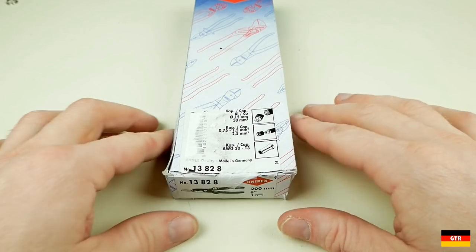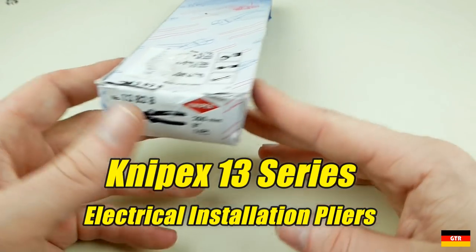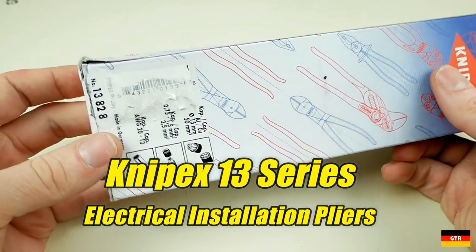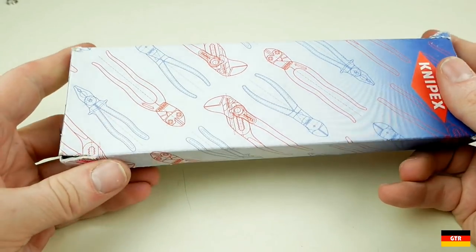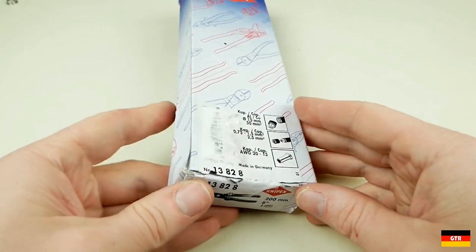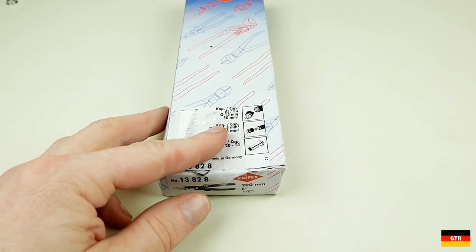Welcome everyone to German Tool Reviews. Today we're going to take a look at the KNIPEX Series 13 pliers used for electrical installation. These are multi-functional pliers that are targeted for electricians doing structured residential and commercial wiring. The particular model I picked up is 1382-8.